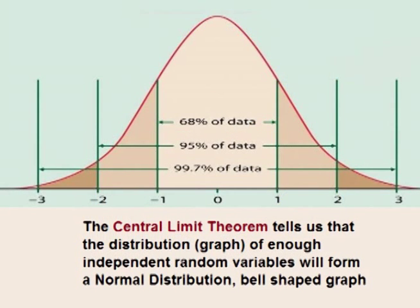Because someone's height is a random number, the central limit theorem tells us that if we make a graph of men's height and we graph enough data, the graph should form a normal distribution bell-shaped graph.